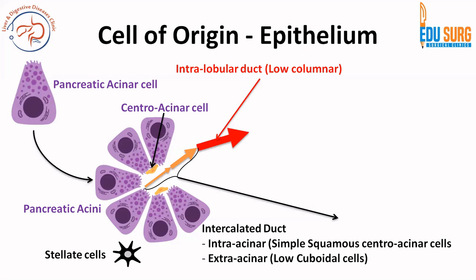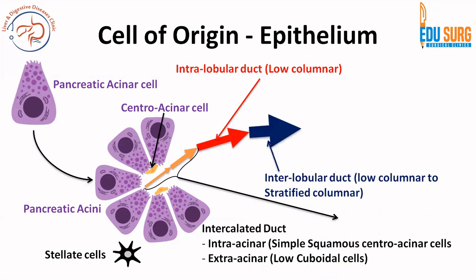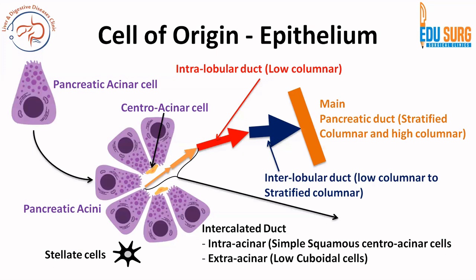From the intercalated duct it continues as the intralobular duct — multiple acini form a lobule of the pancreas, and the intralobular duct is the single common drainage of that lobule. From there it goes between lobules as the interlobular duct. So: intercalated duct within and outside the acini, intralobular duct as the predominant lobular duct, then interlobular duct, and then the main pancreatic duct. The epithelium grows as the duct grows — from simple squamous centroacinar cells to low cuboidal, then low columnar, then stratified columnar, and then high columnar and stratified high columnar in the main pancreatic duct. This is how the digestive enzymes reach the pancreatic duct through this system.